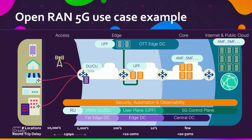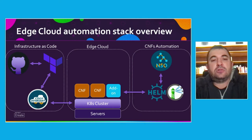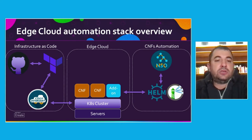Hi, my name is Stefan Braikou and like Nikolaj, I'm part of the Service Provider Innovation Team with a focus on automation. We developed a full automation stack to deploy the infrastructure needed for the ORAN 5G use case, as well as the deployment of add-ons on top of this infrastructure. The infrastructure deployment, which is a Kubernetes cluster, is done using a Git repository monitored by Terraform Cloud. Terraform uses Cisco Intersight to deploy the required cluster.